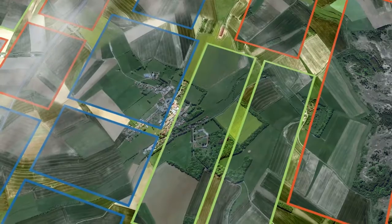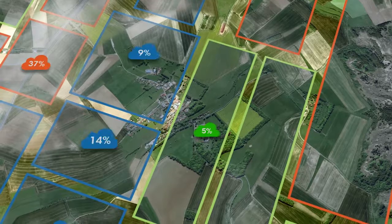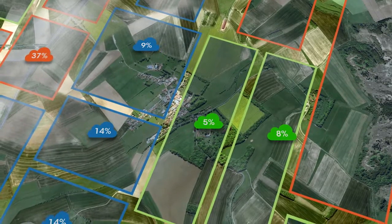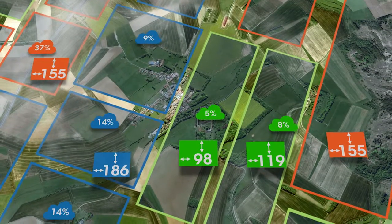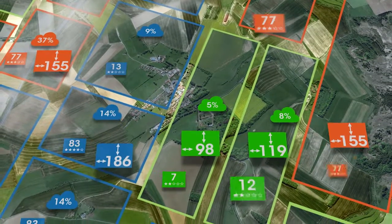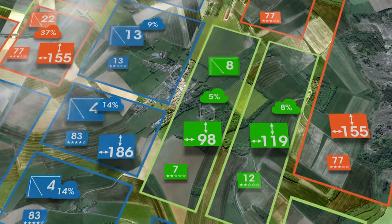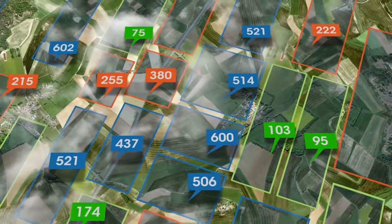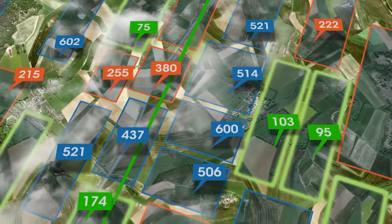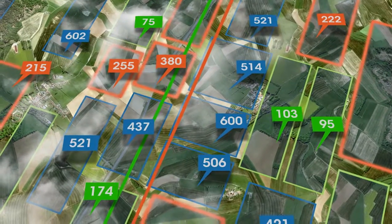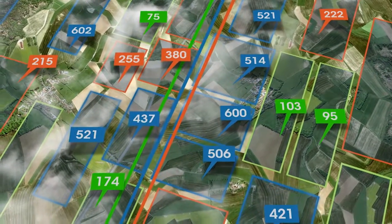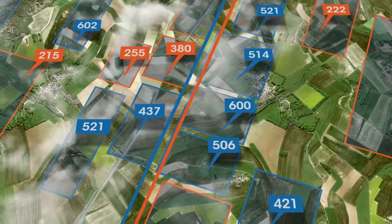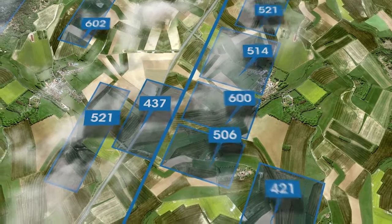Potential imagery collection targets are scored based on weather considerations, relative positioning, customer requirements, and other factors. Targets are then weighed against each other, scores compared, and we create a plan with the highest collection score.